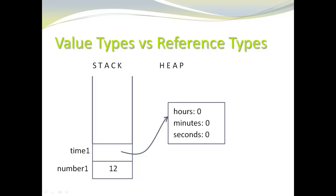Hi, my name is Margret Posch. In this video, I want to talk about Java value types and reference types and how to pass arguments to methods. At the very beginning, I want to point out that there are different areas in the memory. There is a stack — this is where local variables and parameters are stored — and there is a heap. This is where objects are stored.